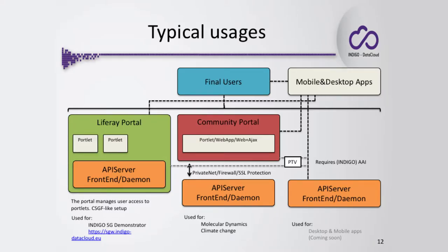Let's spend some time on this slide because here we have the typical usage of the Future Gateway. On top we have the final user, who can exploit the APIs with the Liferay portal and its portlets — you can see the green box on the left. This first approach is the typical approach provided by the Catania Sense Gateway framework. In the middle, the final user can deal directly with a generic kind of community portal, where it is possible to develop web applications, portlets, or any kind of web plus Ajax calls.